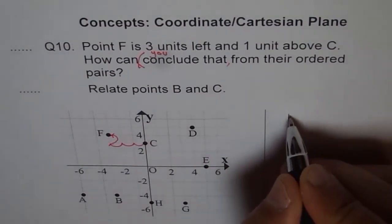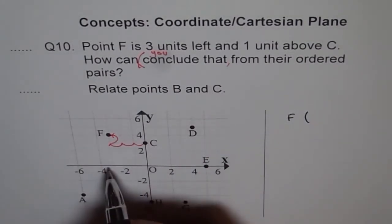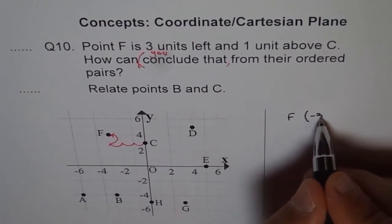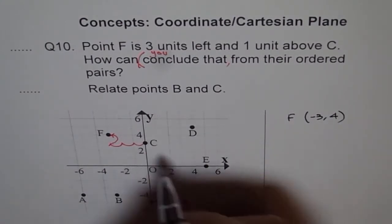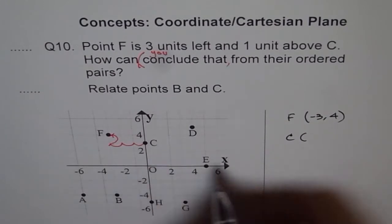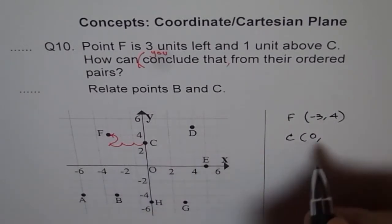Let's write down F is (-3, 4). How about C? C is (0, 3).